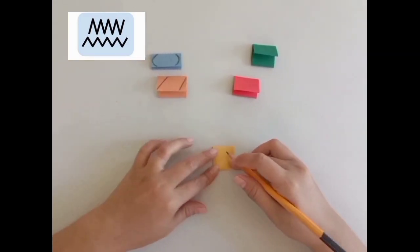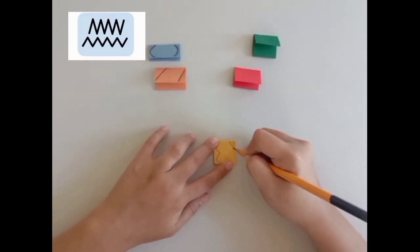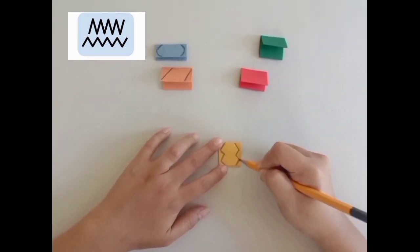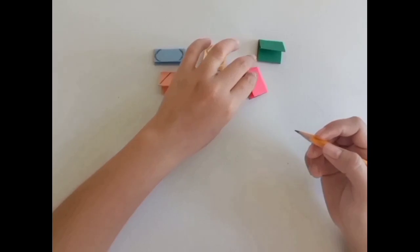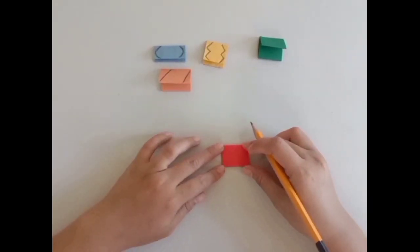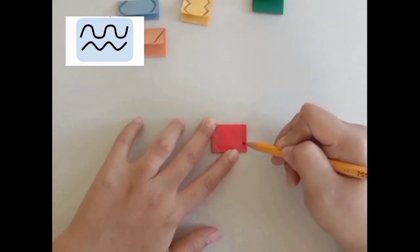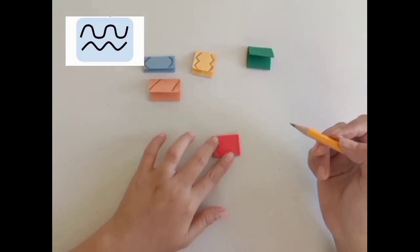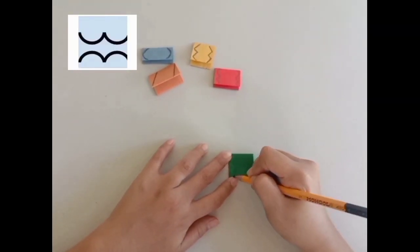This worm gets a zig-zag line. This worm gets a wavy line. And the last worm gets two curves.